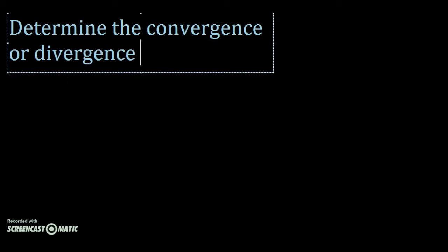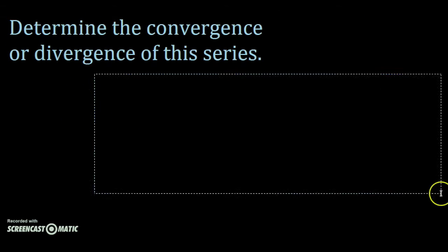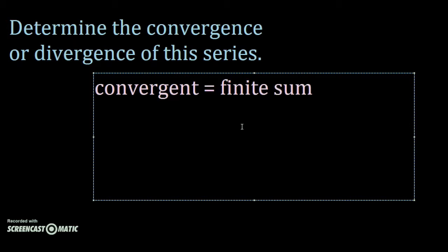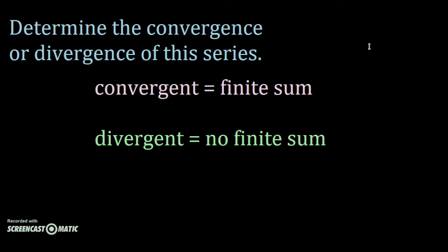So you're in Calc class and you see a question that asks you to determine the convergence or divergence of the following series. You know that convergent means that the series has a finite sum and divergent means it doesn't, but how do you determine that?